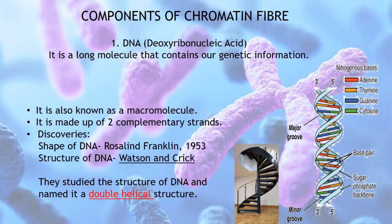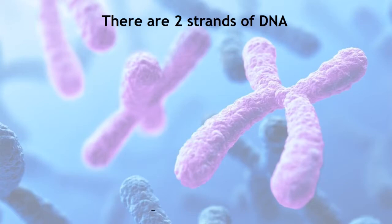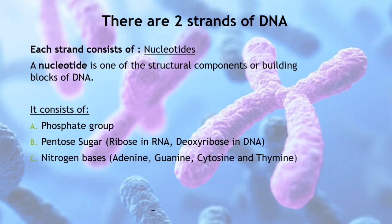The structure of DNA was studied and named the double helix by Watson and Crick, for which they were awarded the Nobel Prize in 1962. There are two strands in a DNA molecule, and each strand consists of units known as nucleotides. A nucleotide is one of the structural building blocks of DNA. A nucleotide molecule consists of three things: a phosphate group, a pentose sugar, and nitrogenous bases. The pentose sugar differs between RNA and DNA — ribose is present in RNA and deoxyribose is present in DNA.